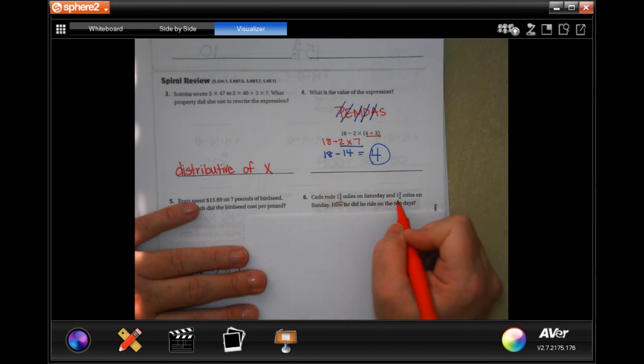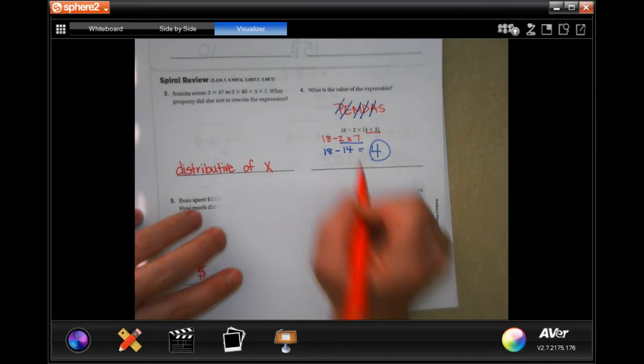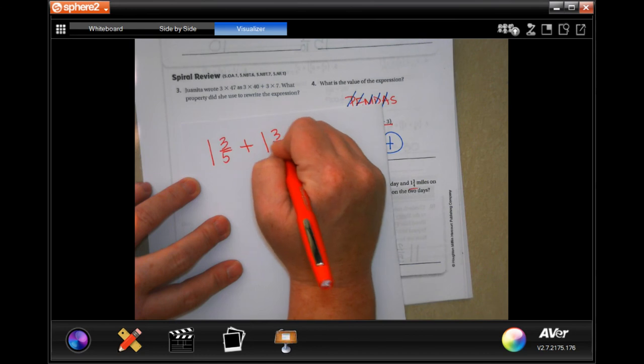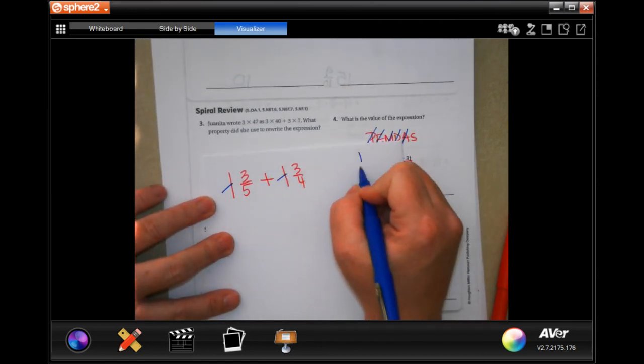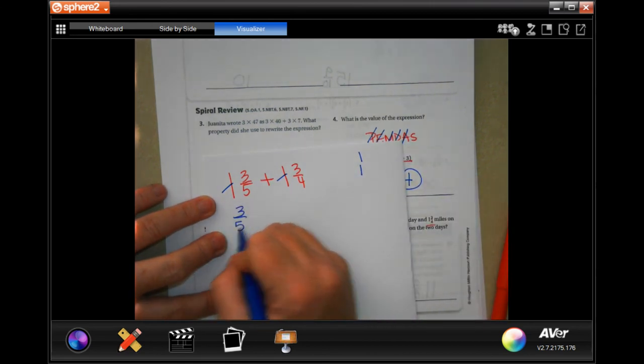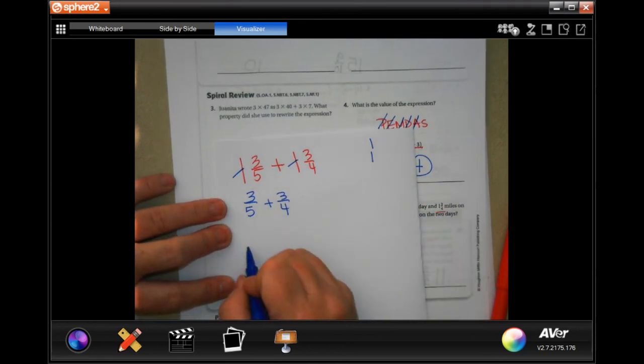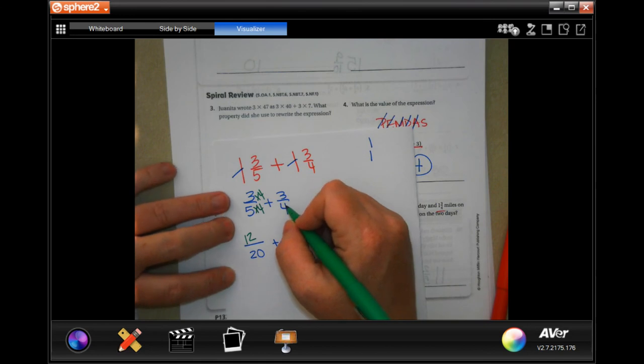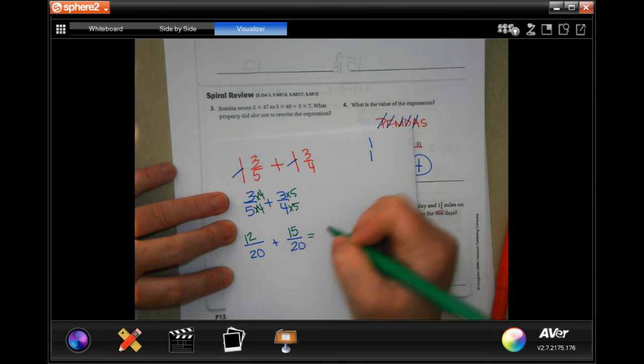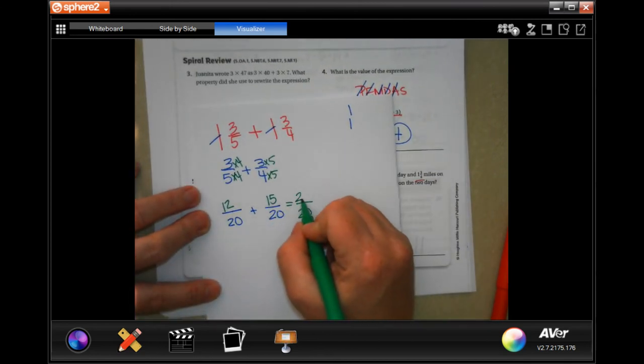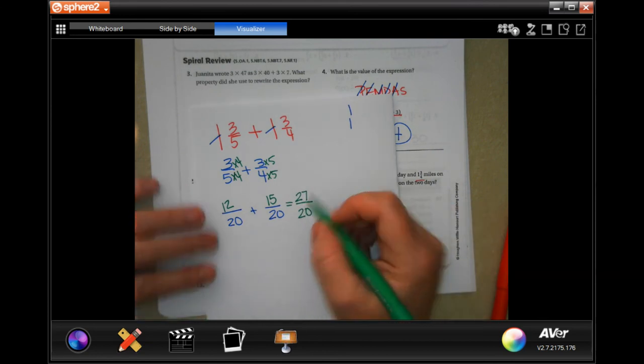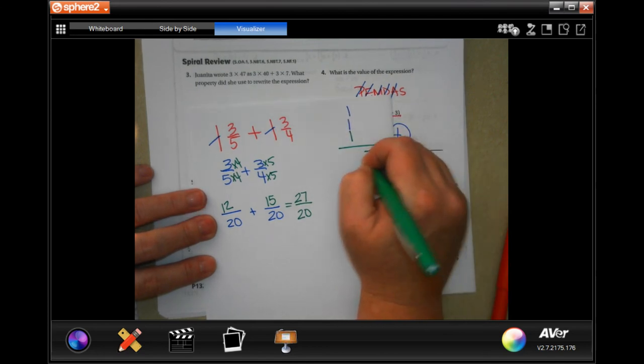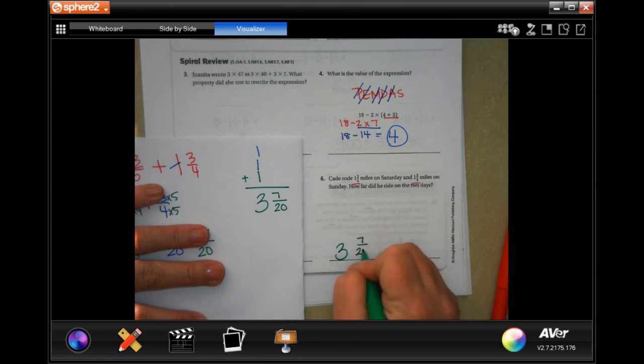Cade rode 1 and 3 fifths miles on Saturday and 1 and 3 quarter miles on Sunday. How far did he ride on the two days? So, 1 and 3 fifths and 1 and 3 quarters. Well, we've been taking off our whole numbers. Now, I just have 3 fifths and 3 quarters. Common denominator of 5 and 4 is going to be 20. In order to get from 5 to 20, I have to multiply by 4. Multiply by 4. So, I'm going to have 12. In order to get from 4 to 20, I have to multiply by 5. Multiply by 5, I have 15. Denominator stays 20. And 12 plus 15 is 27. Well, 27 over 20, we can't do. So, 20 goes into 27 one time. I would have 7 left over. And my denominator stays 20. So, when I add up my whole numbers, 3 and 7 twentieth, and it says miles.